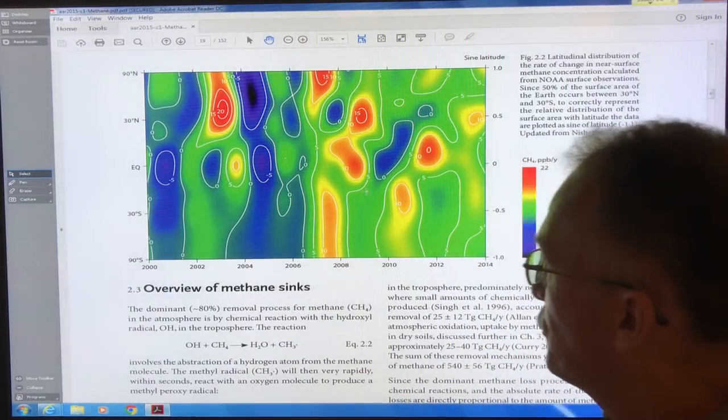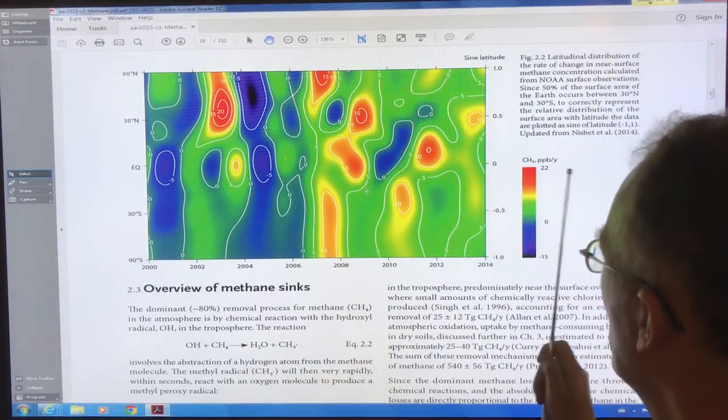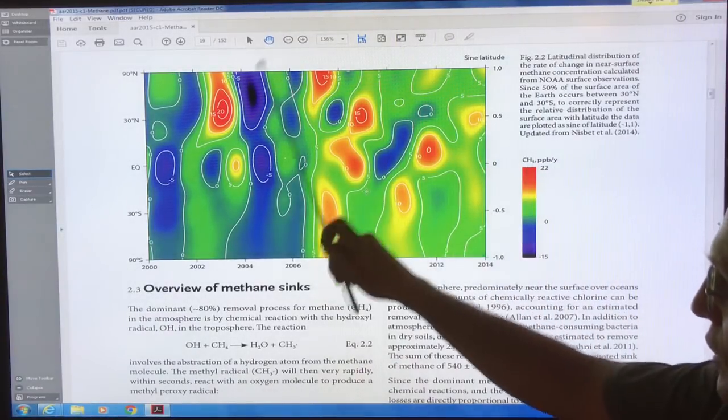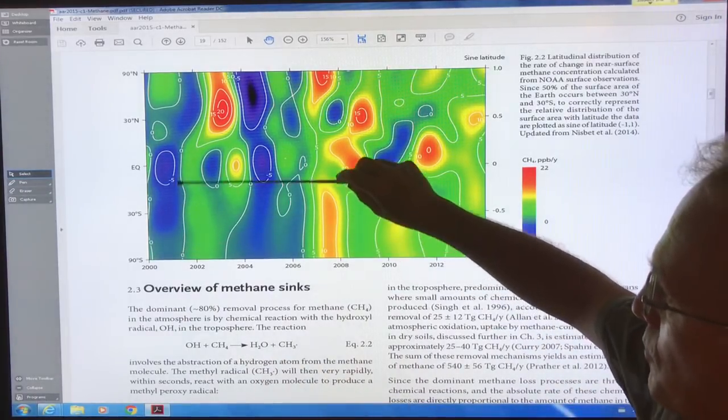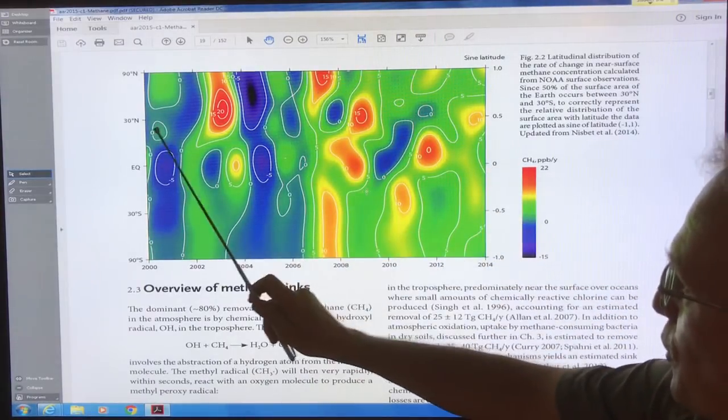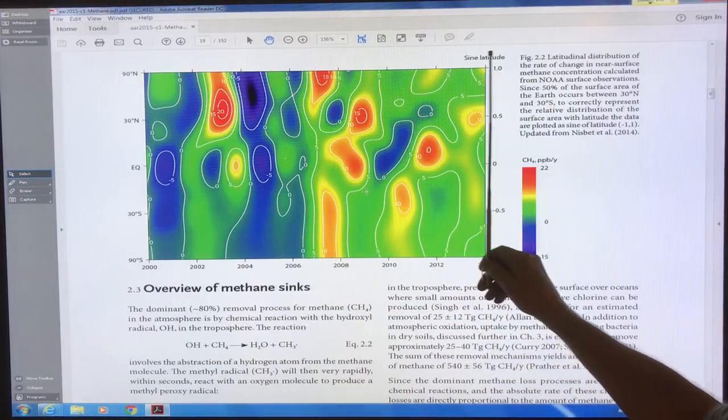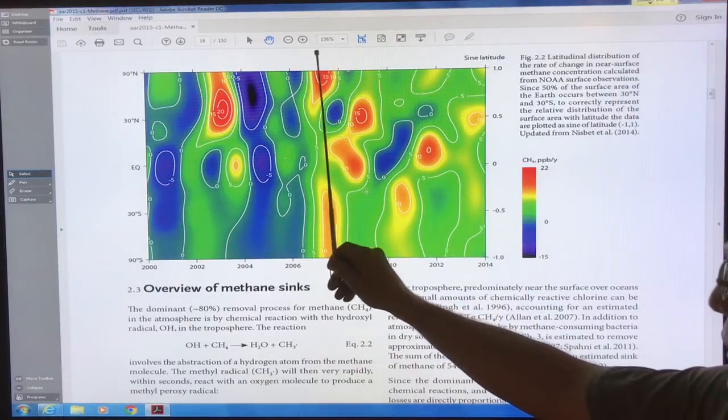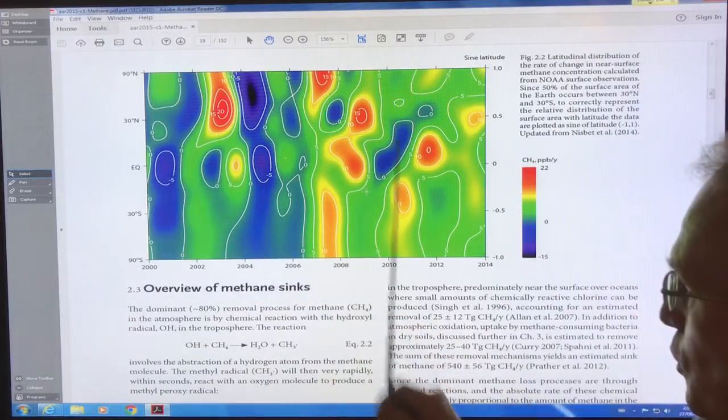So this image here showed the changes of methane in parts per billion per year globally from 2000 to 2014. This is the equator, this is up to the North Pole and the South Pole. What you can see basically from 2007 onwards, the methane levels in the atmosphere have been rising fairly rapidly. There were periods when they were more stable globally.